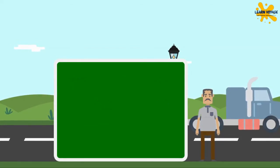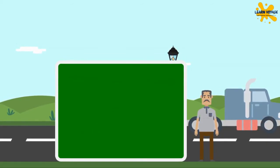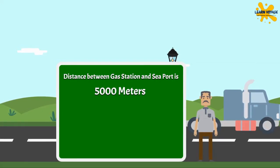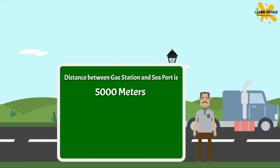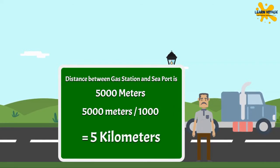Now you try it out. Can you help me calculate the distance between the gas station and the seaport in kilometers, if the distance is 5000 meters? Just divide 5000 by 1000, and we get 5 kilometers.